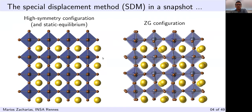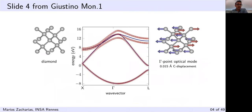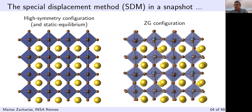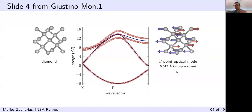Here is the Special Displacement Method in a snapshot. We start from the high-symmetry structure where all nuclei are at static equilibrium, use all phonon modes to displace the nuclei, and get a thermally displaced configuration. We choose only one configuration that best incorporates the effect of electron-phonon coupling. The atoms are displaced deterministically along all phonon modes, with displacements based on the Bose-Einstein occupation of those modes at a particular temperature, taking into account the phonon frequency.